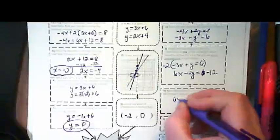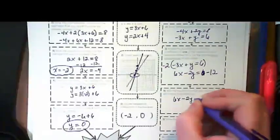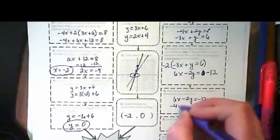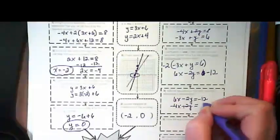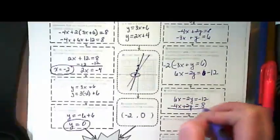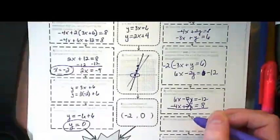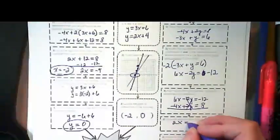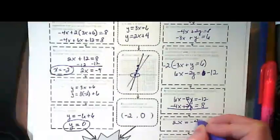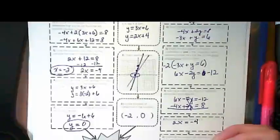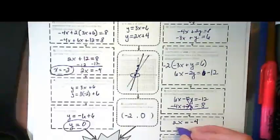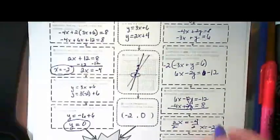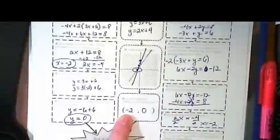Then we're going to add the equation so we can eliminate a term. It leaves us with 2x is equal to negative 4. We're going to solve for that x, which we already know is negative 2, and it shows up again.